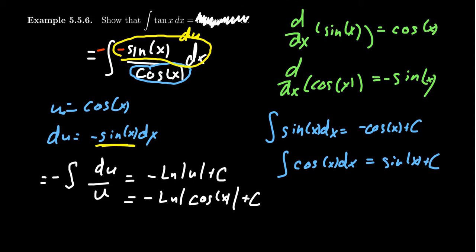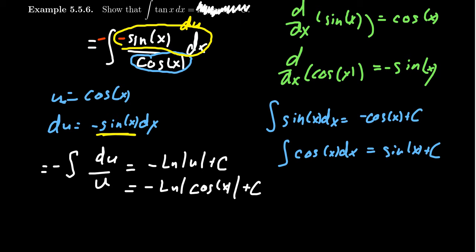And a lot of people are quite content with that as a final answer. But by properties of logarithms, a coefficient in front of the logarithm is equivalent to an exponent on the inside. And so raising something to the negative exponent takes its reciprocal. So we get the natural log of one over cosine of x. And the reciprocal of cosine, of course, is just secant. So we get the natural log of the absolute value of secant of x plus a constant.